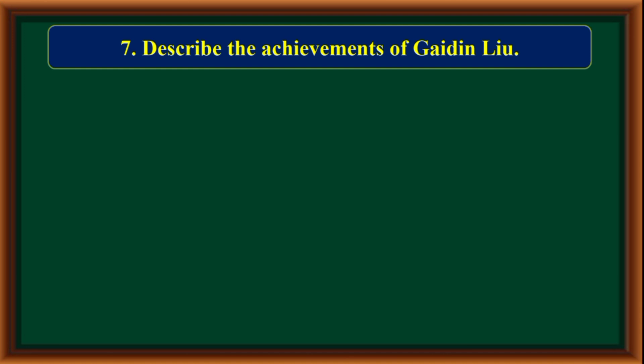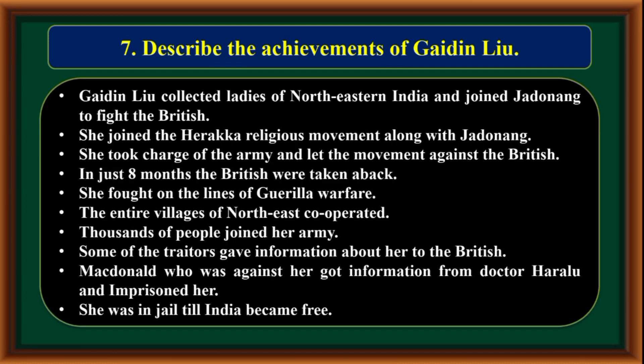Describe the achievements of Gaidinliu. Gaidinliu collected ladies of northeastern India and joined Jadunang to fight the British. She joined the Heraka religious movement along with Jadunang, took charge of the army, and led the movement against the British. In just eight months, the British were taken aback. She fought using guerrilla warfare tactics. The entire villages of the northeast cooperated, and thousands of people joined her army. Some traitors gave information about her to the British. McDonald, who was against her, got information from a source and imprisoned her. She was in jail until India became free.